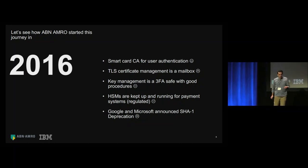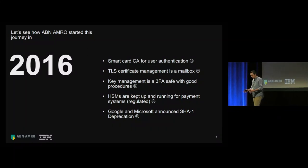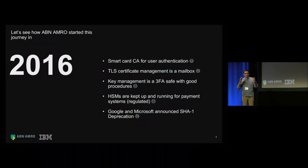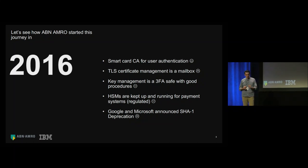They also had a central key management service — essentially a very large, very secure three-factor authentication safe with good written procedures to access key material. It was quite secure, but not very scalable and painfully slow: every time a key needed to be inserted into a system, the process took at least half a day to a full day, and multiple people had to be involved. They also had HSMs for their payment systems, centrally managed by the crypto services team.